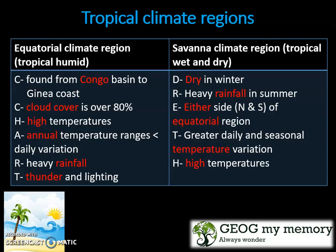The tropical climate regions encompass the equatorial and savannah climate regions. The equatorial climate region is found from the Congo Basin to the Guinea Coast. Its cloud cover is over 80%. It has high temperatures, and the annual temperature ranges are lower than the daily variation. It has heavy rainfall, thunder, and lightning. To remember this, you can use the acronym CHART.